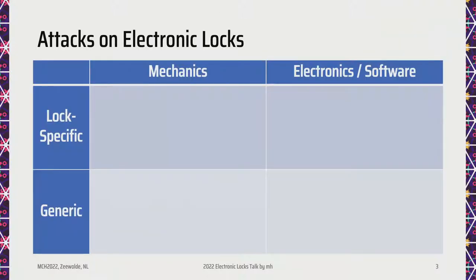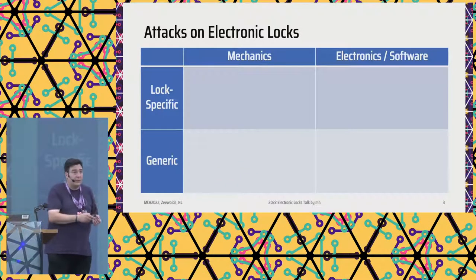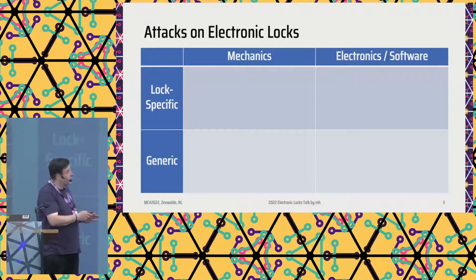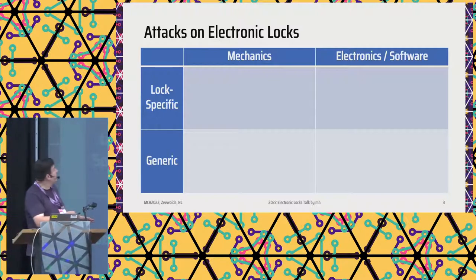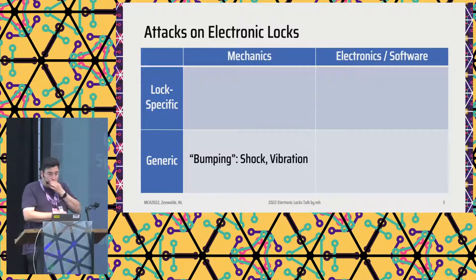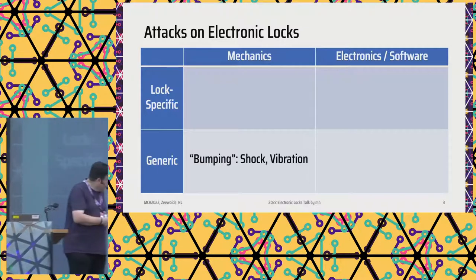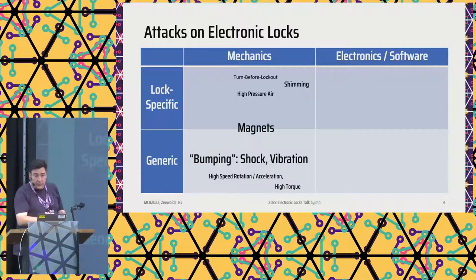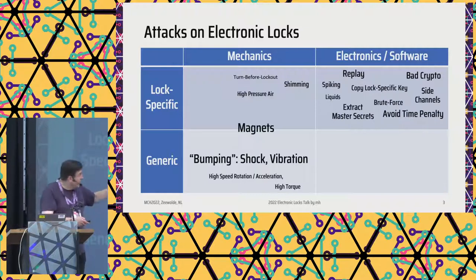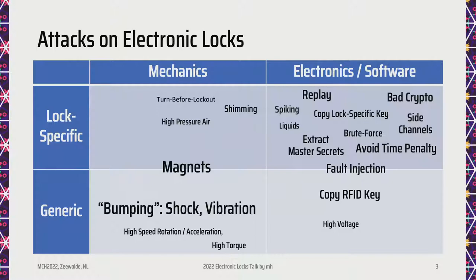To make it a little bit easier to follow this talk, I made four segments. Obviously, electronic locks are electromechanical systems, so you can attack the mechanics part or the electronics and software part. And also to sort it a little bit, there are generic attacks that work on many locks, and then there are also very lock-specific attacks. As an example, bumping is very generic and attacks the mechanical part. There are other ways, like magnets. For electronics and software, there's a lot of attack surface, but it is typically very lock-specific. Some things are generic, like RFID keys that can be copied.